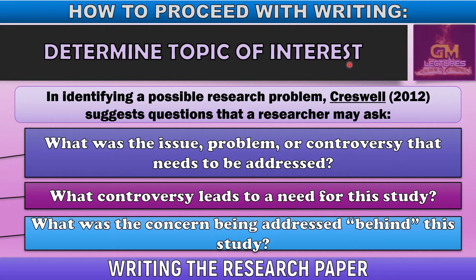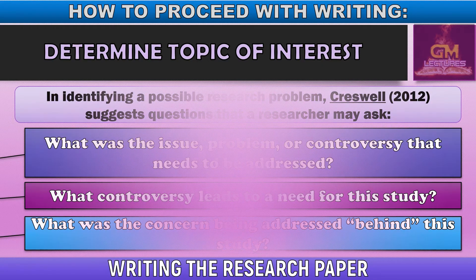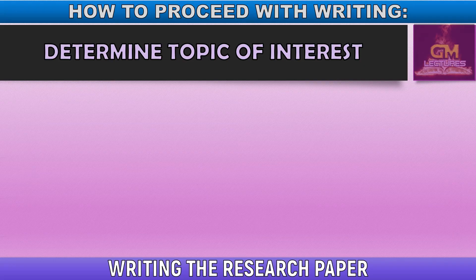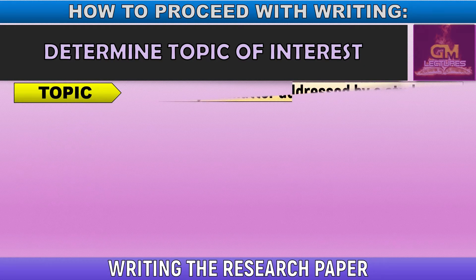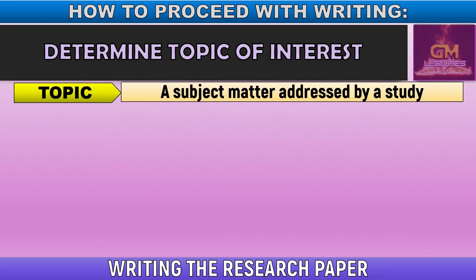Otherwise, if you search for a topic or conduct research on a topic that is far beyond your interest, you might find it difficult to actually finish or proceed with the study. Now, let's have a short recap. When we say topic, it refers to a subject matter that is addressed by a study. A topic must have the following characteristics — it must be SMART.